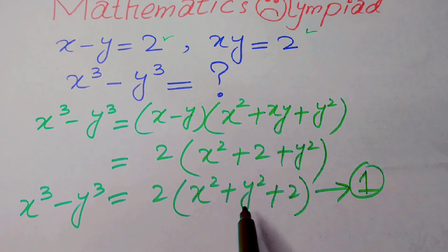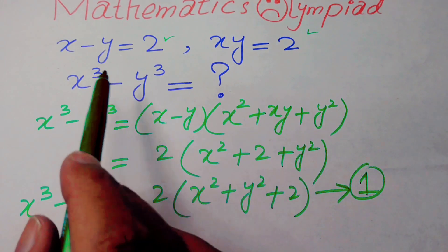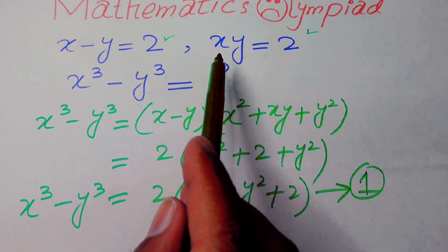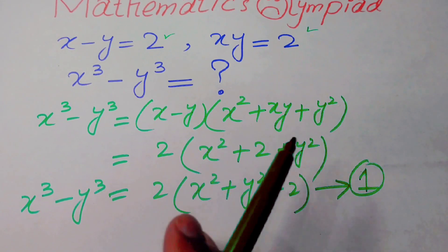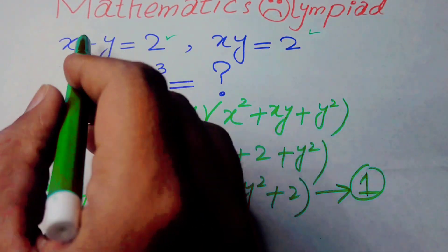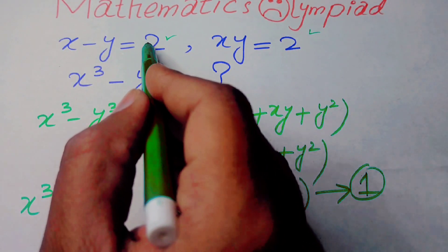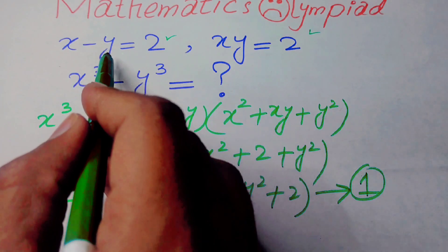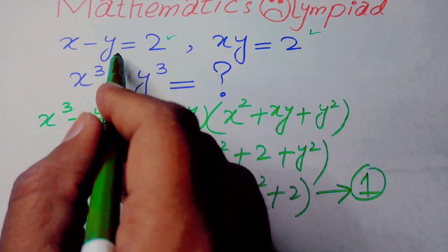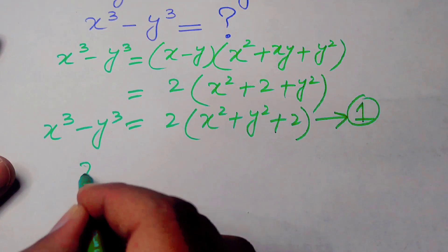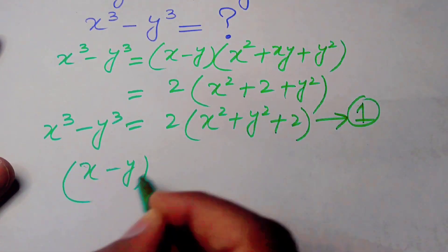We don't yet have the value of x squared plus y squared, but don't worry — we will find it using the values of x minus y and x times y. We take the value of x minus y equal to 2 and square both sides.